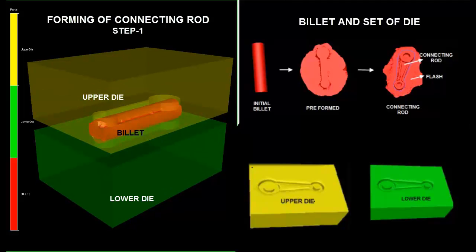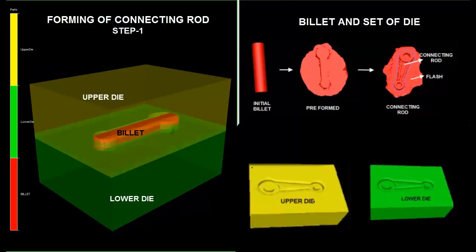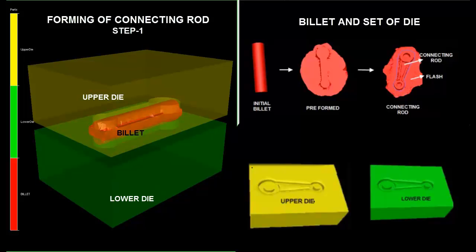On the top right hand corner, the two stages of manufacturing are shown. The first red picture shows the initial billet, the middle red picture shows the preform, and the final red picture is the end product in two steps.